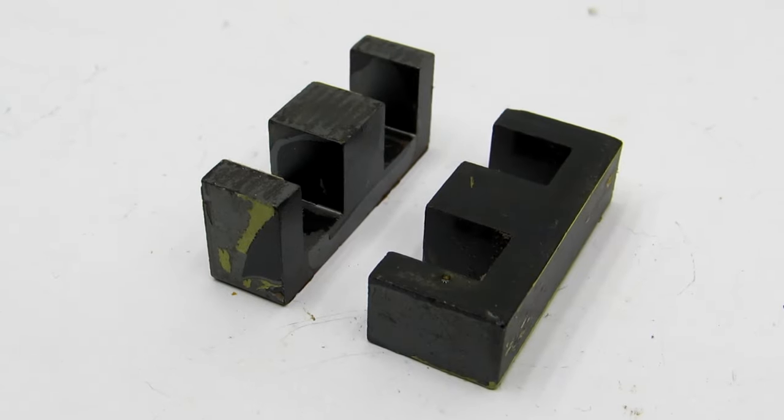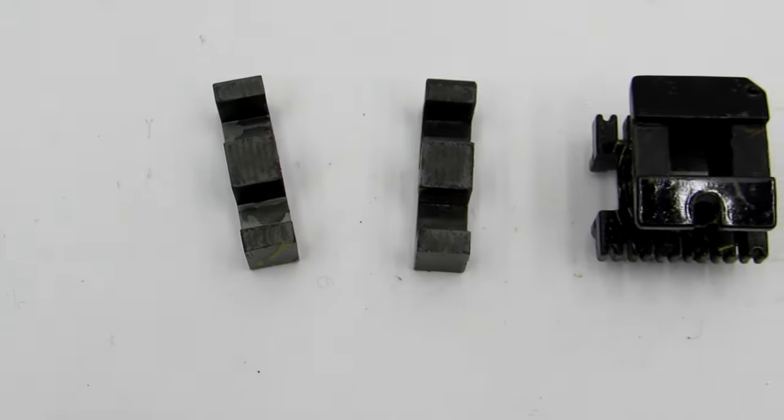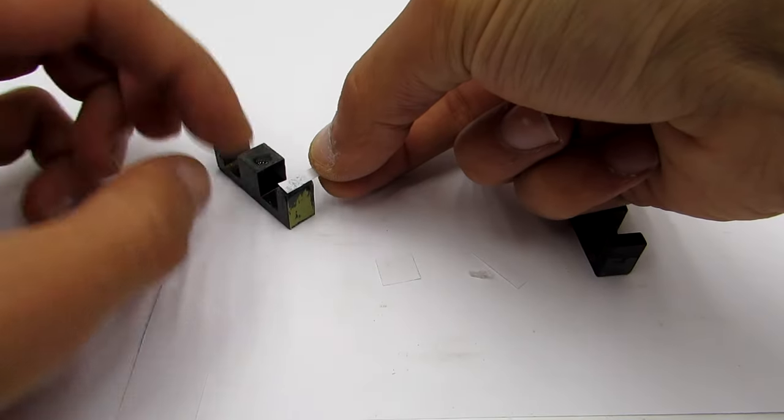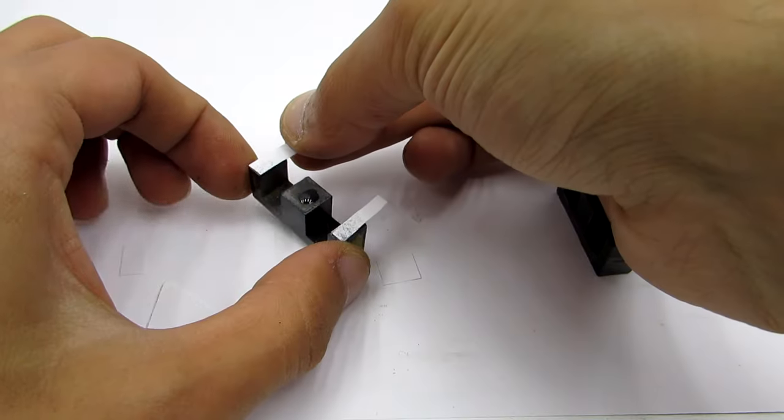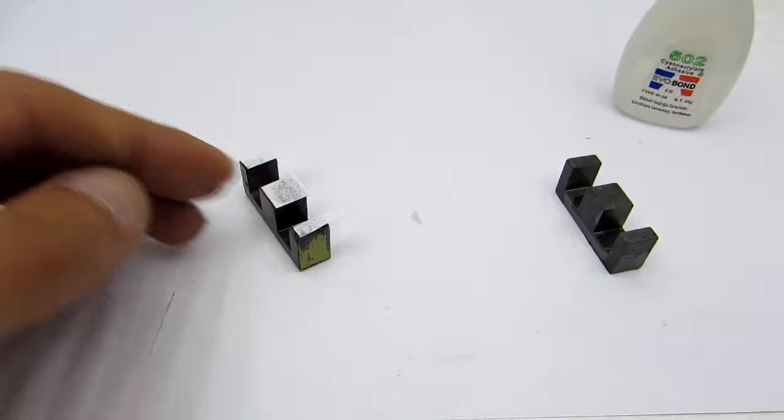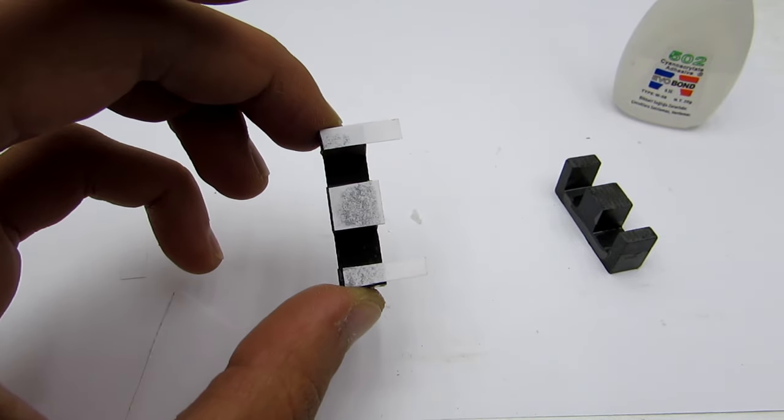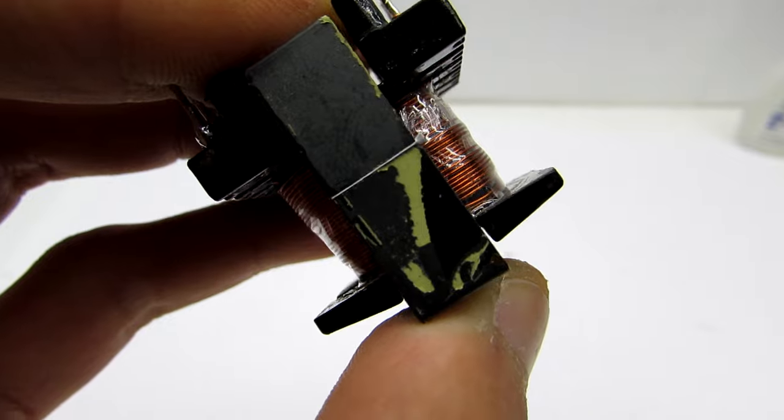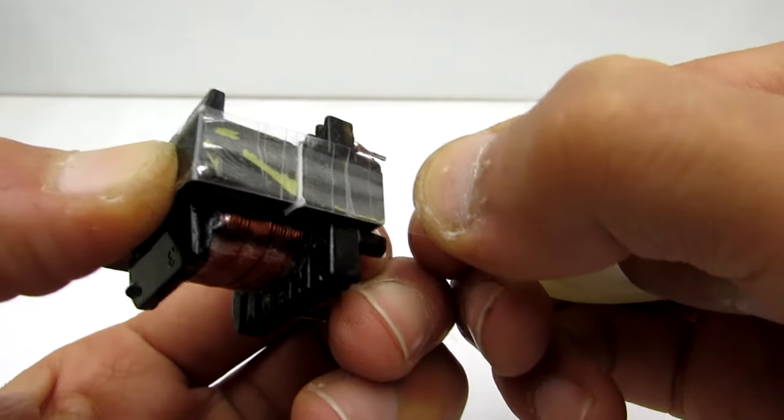Now it is necessary to glue the halves of the core. But the scheme is a single-ended converter, so the transformer must have a non-magnetic gap. To do this, cut out a piece from an ordinary A4 paper and glue it. Fix the halves together with tape, or they can be tightly glued with superglue.